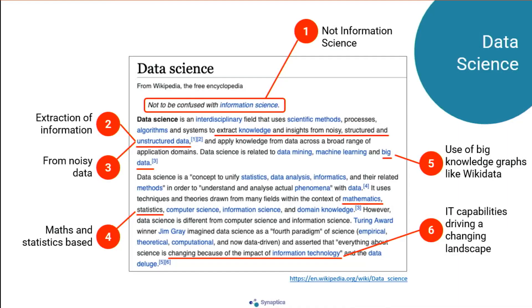Information science also touches upon organizational aspects, which is really the boundary crossover to knowledge management and the human aspects of KM. Now let's look at data science — and an important first point: not to be confused with information science. It is about the extraction of information, often from noisy data sources.